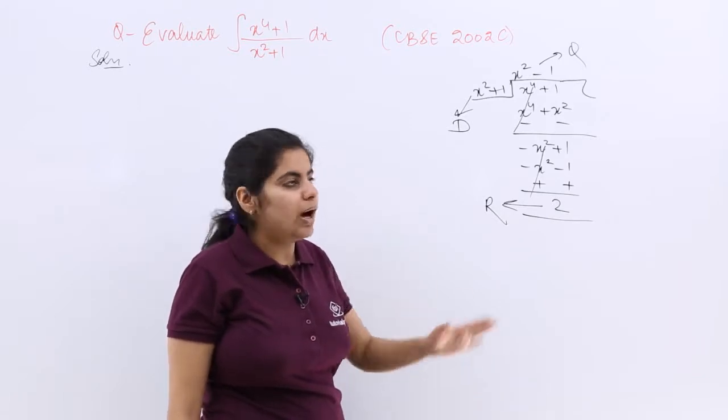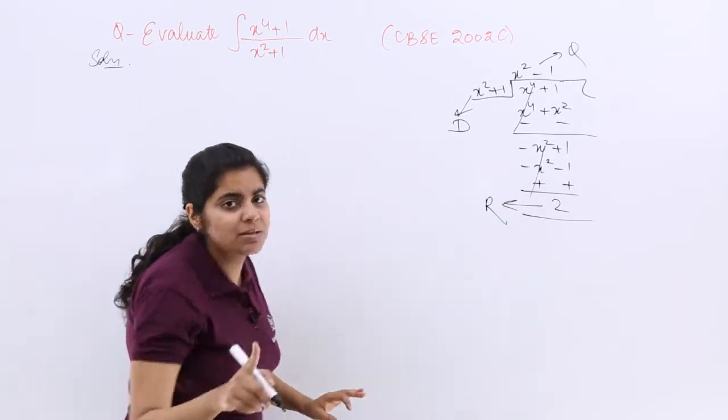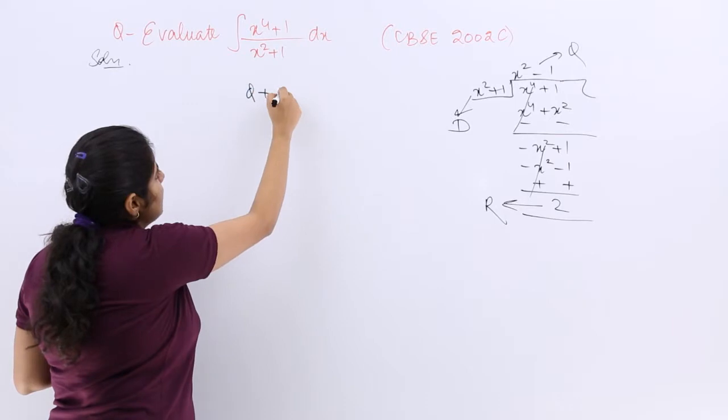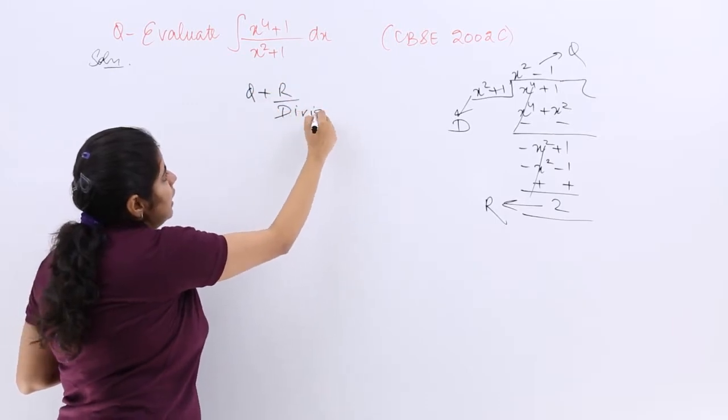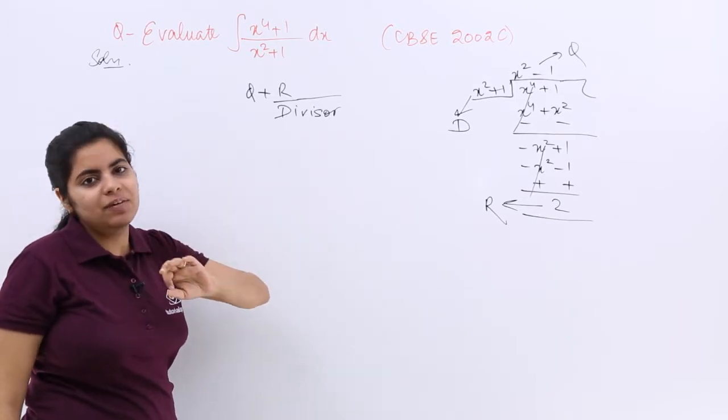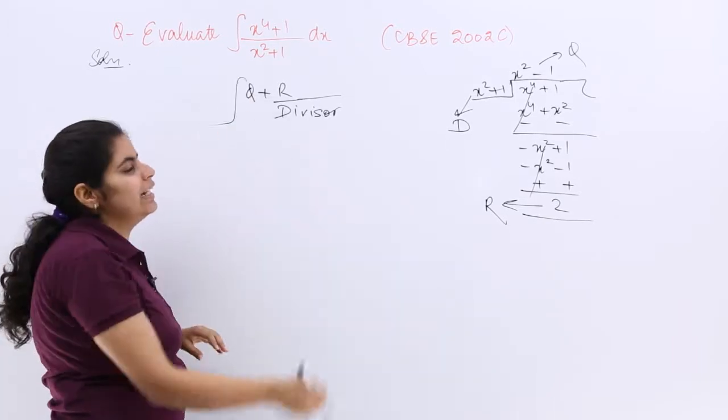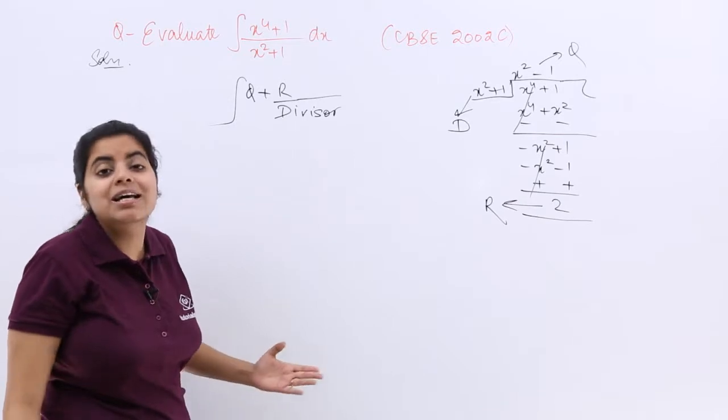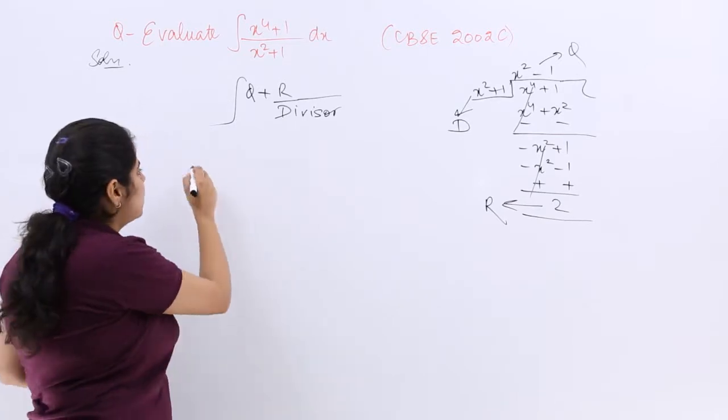Now what you have to do after the long division? You have to simply follow Q plus R upon D, divisor. That means Q plus R upon divisor you have to follow and you have to just simply integrate. That will give you the answer. As simple as that. Let me adopt this methodology.